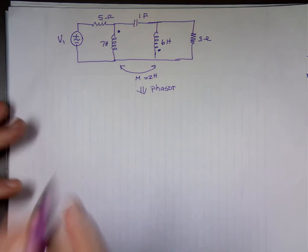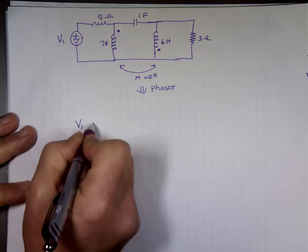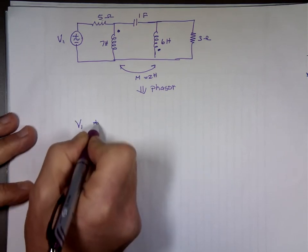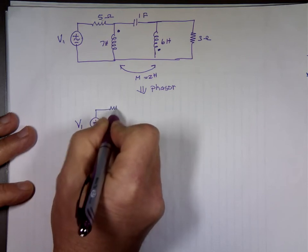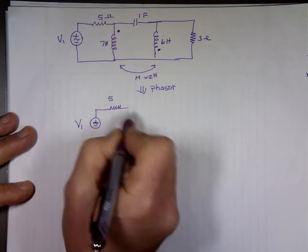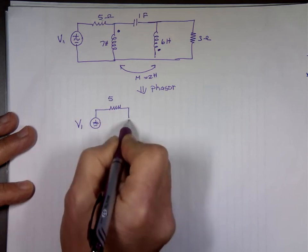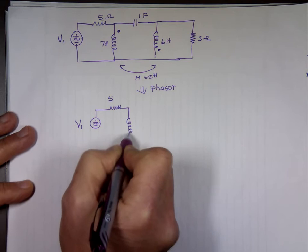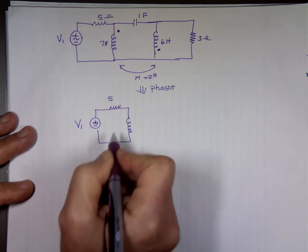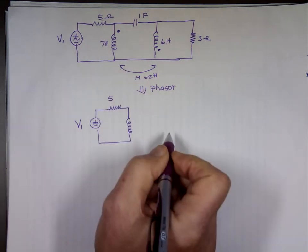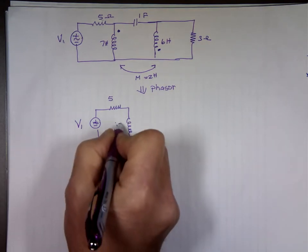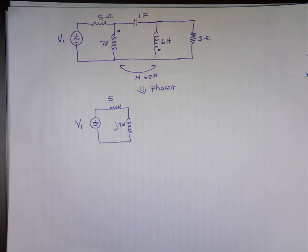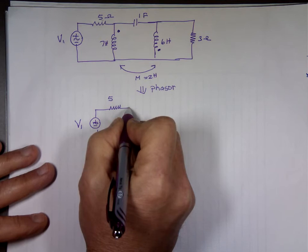So if I change it to a phasor this will be a capital V1. The resistor doesn't change, that's still 5. The inductor here is jωL, so that will be j7ω.